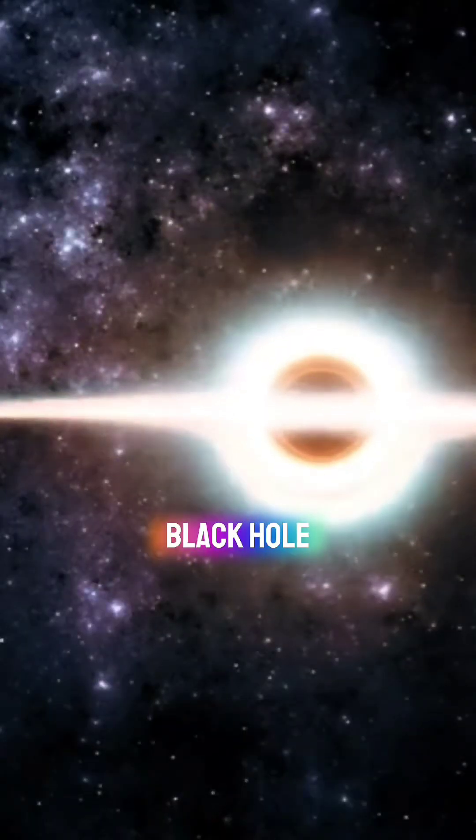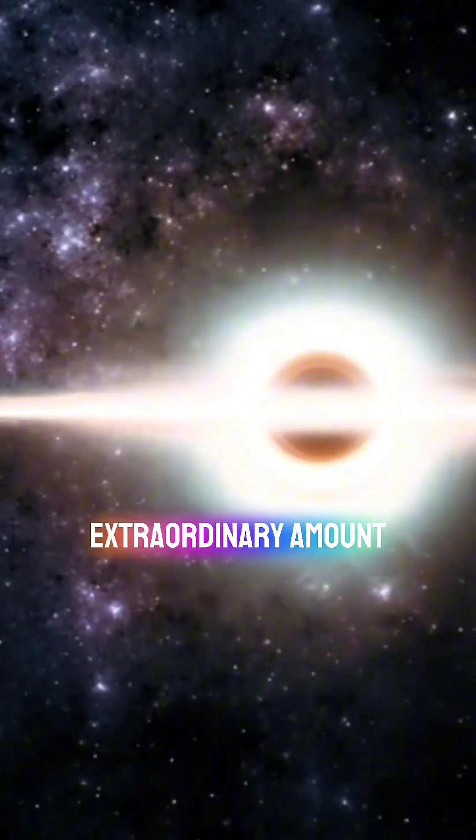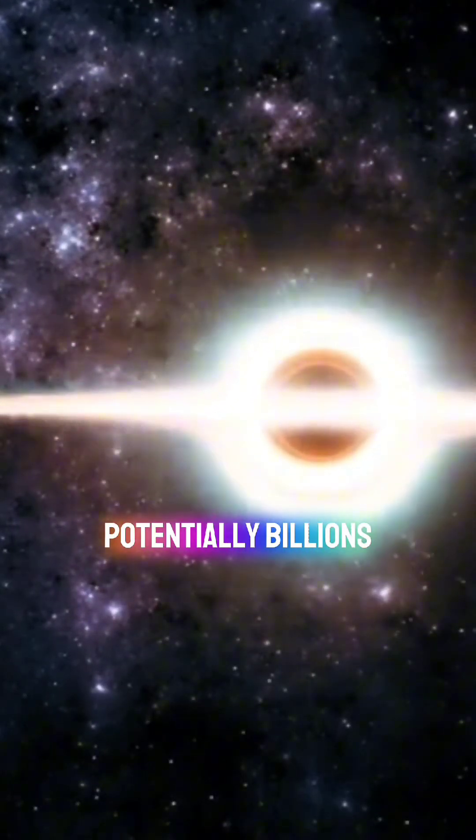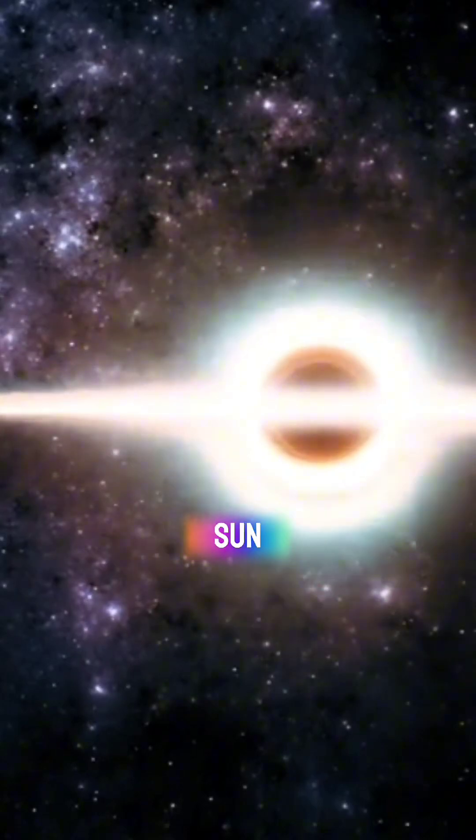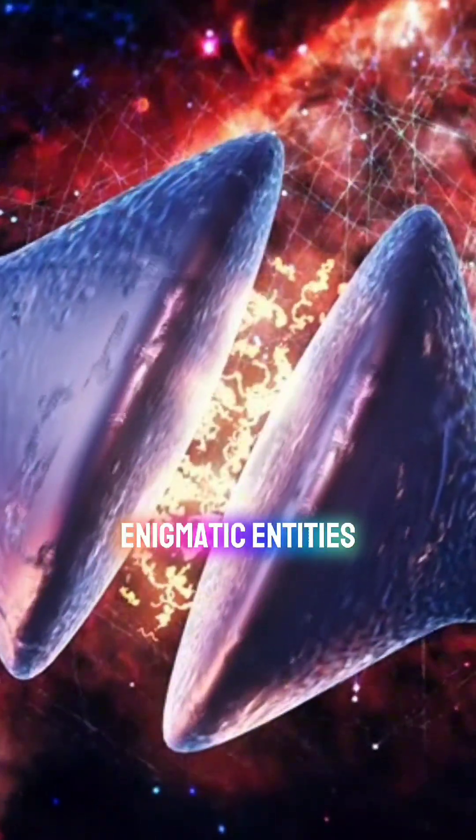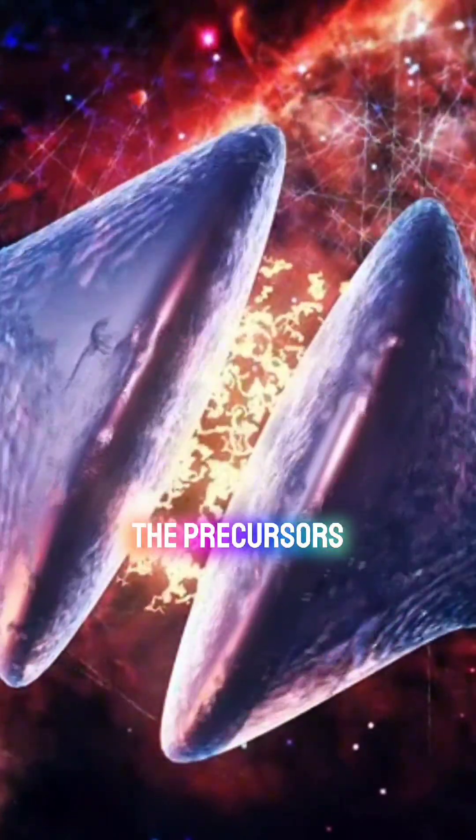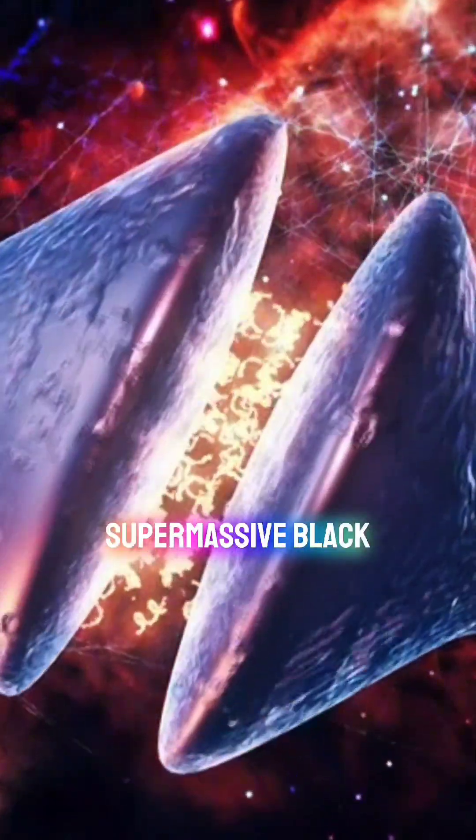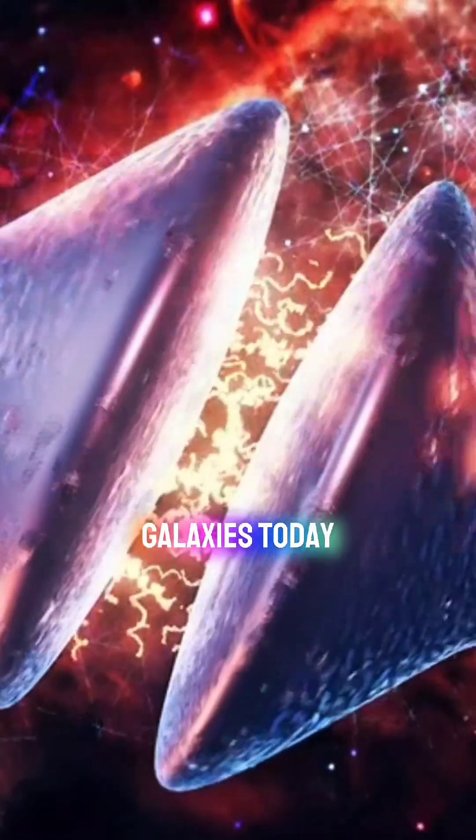As a result, black hole stars are thought to emit an extraordinary amount of light, potentially billions of times brighter than our own sun. Some scientists even suggest that these enigmatic entities may have served as the precursors to the supermassive black holes that reside at the centers of galaxies today.